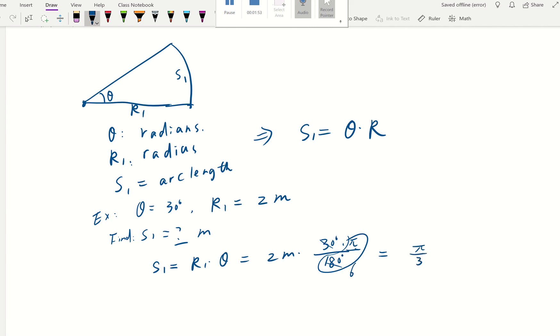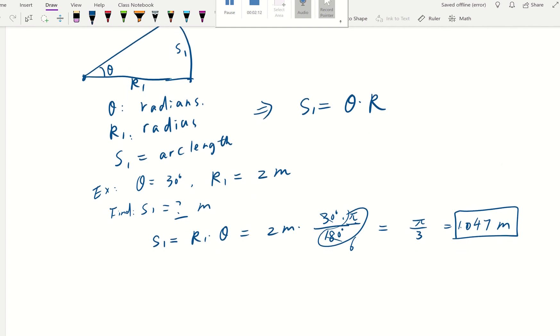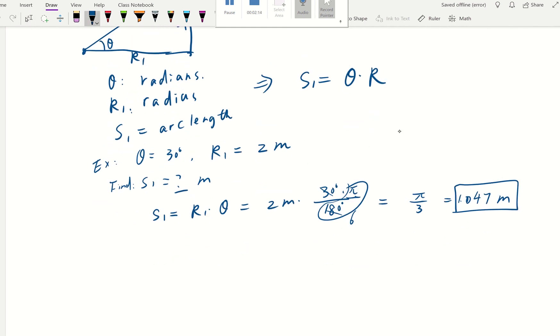So it would be π over 3. If you want to use the approximate value for that, it's going to be 1.047 meters. So that's going to be the arc length for that. And now let's look at another example.